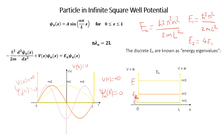E3 equals nine times E1, and E4 equals sixteen times E1. So in units of E1, the energy eigenvalues are 1, 4, 9, 16, and so on. We have infinite energy eigenvalues that we can plot on the energy axis within the potential well.